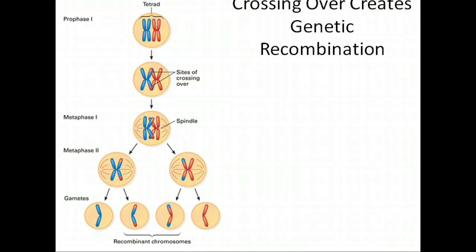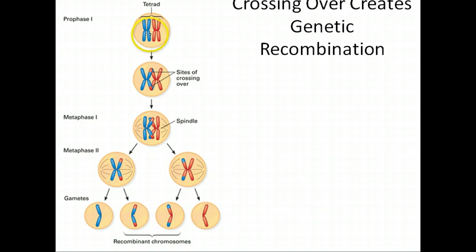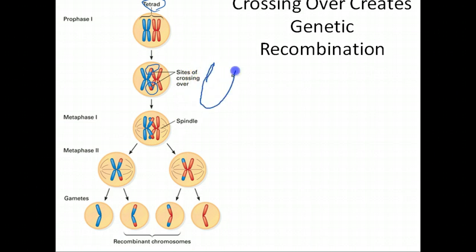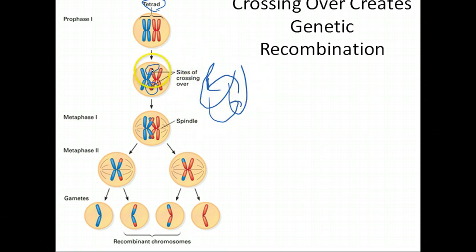I rushed through this part last time but I wanted to go over it again. In prophase one, when you form a tetrad of homologous chromosomes, the blue represents the homologous chromosome from dad and the red represents the homologous chromosome from mom, and they're duplicated. So there are two sister chromatids from dad and two sister chromatids from mom — those four create what's called a tetrad. Tetrads make contact at various sites, and at these contact sites crossing over occurs, where literally genetic material from one chromatid is transferred over and genetic material from another chromatid is transferred back. The red switches over here and the blue switches over here.